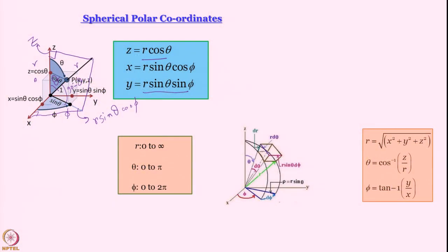We know that ψ·ψ* dτ is the probability of finding a particle at some point within a small volume element. In Cartesian coordinates dτ = dx dy dz. When working in spherical polar coordinates it becomes different, and this is something we need to learn.